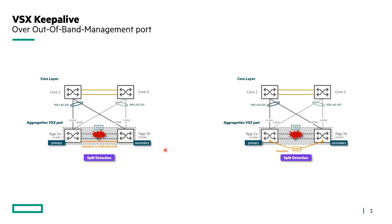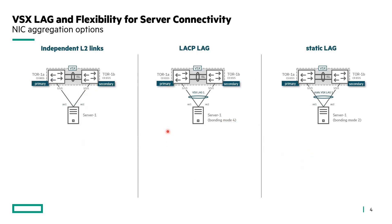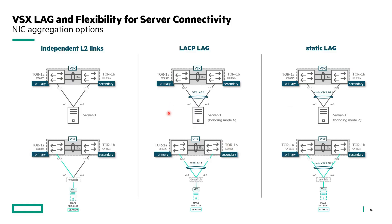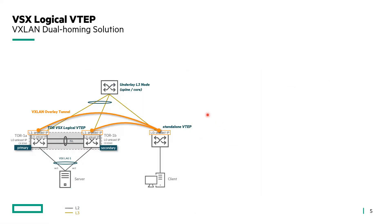Next is a reminder of various options to aggregate downlinks to servers, from independent Layer 2 links to LACP or static LAG. This is useful to understand these options when deploying a virtual switch or distributed virtual switch. Please note that HPE Morpheus VM Essentials brings active-active bonding mode with no extra work or cost. Another topic of interest is VSX LAN dual homing with VSX logical VTAP.